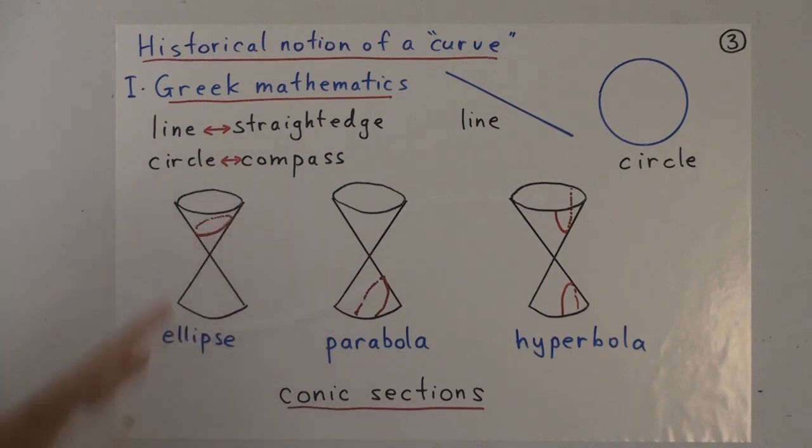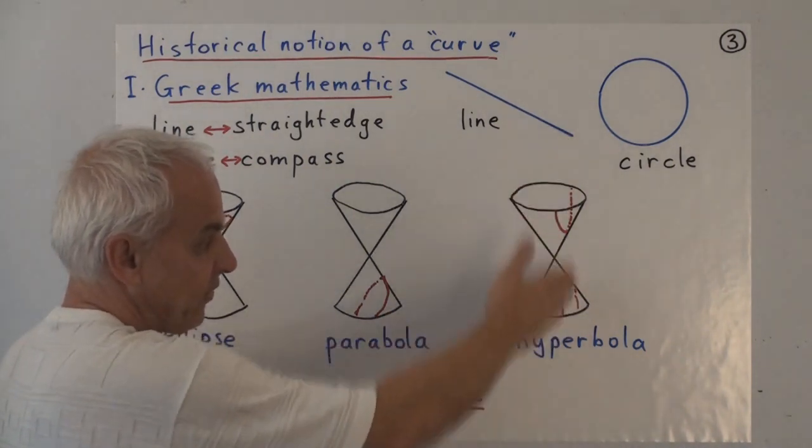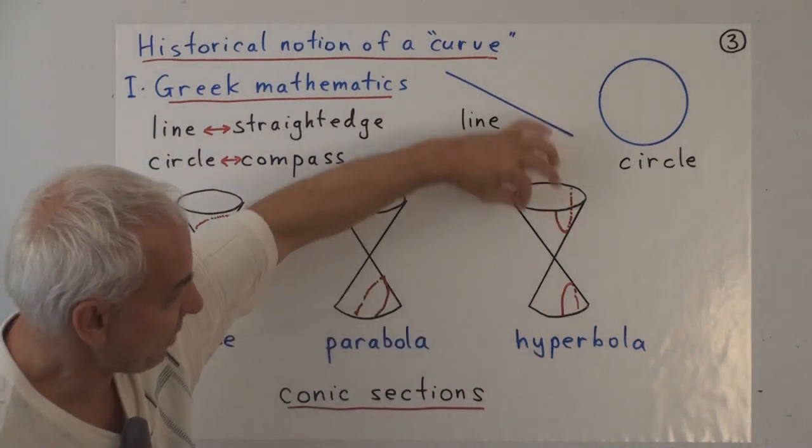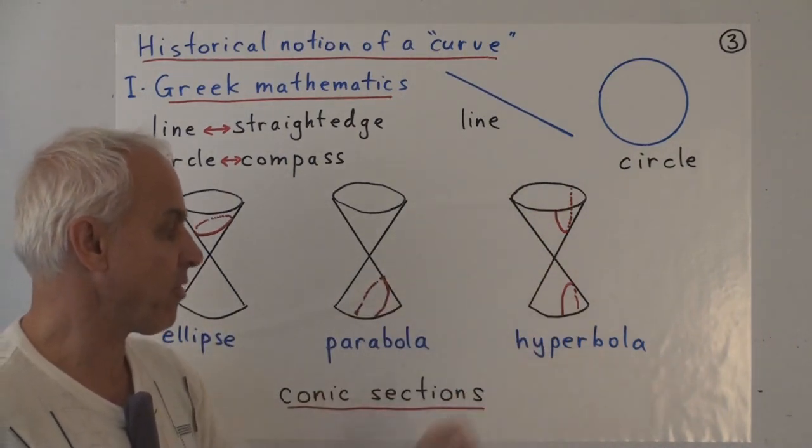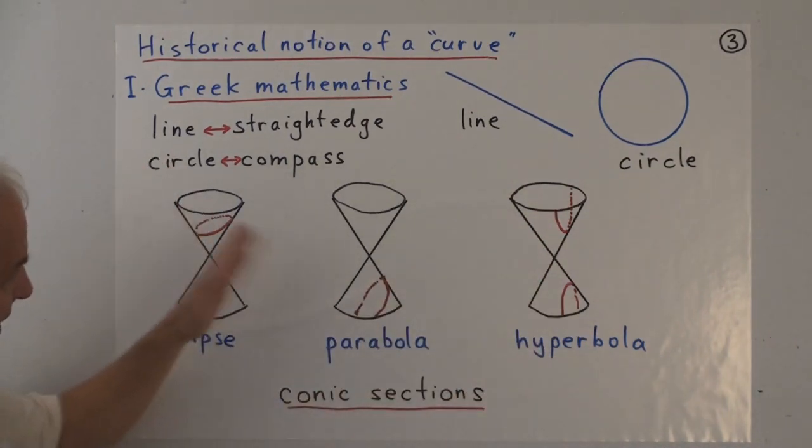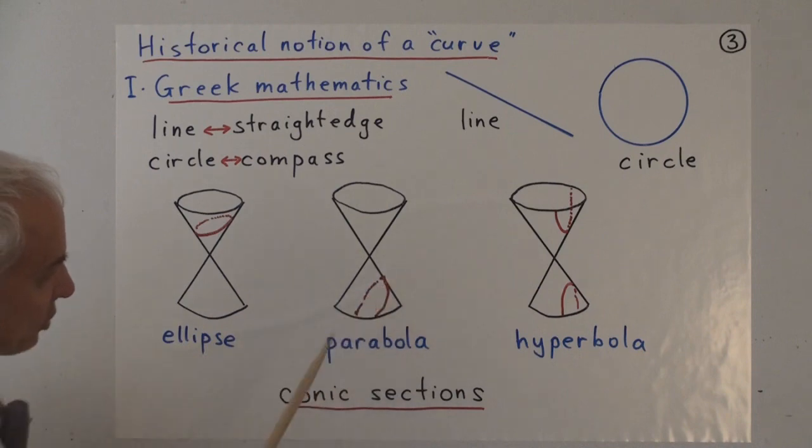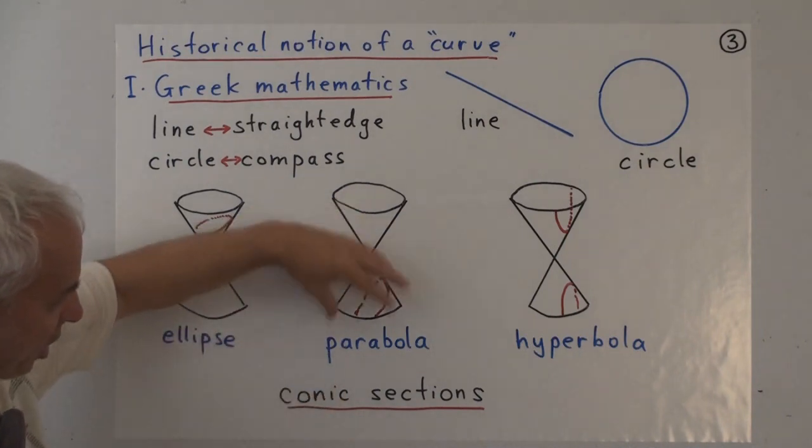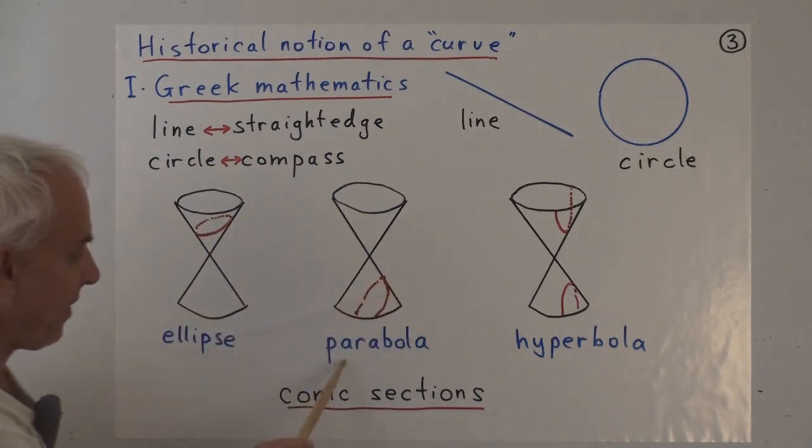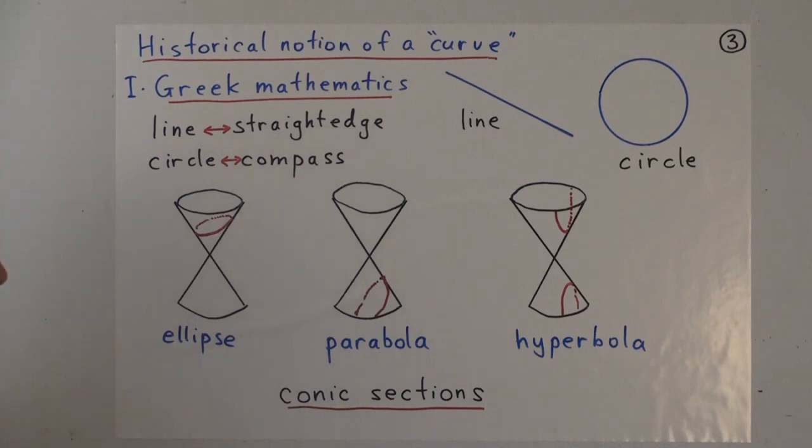If you slice the cone with a plane in that orientation, you get an elliptical cross-section. If you slice it with a plane something like this, then you cut both the top and the bottom parts of the cone to get a hyperbolic cross-section, a hyperbola. And then sort of halfway between these, poised between them, is the case when the plane is just parallel to one of the lines of the cone, and that way you get a parabola.